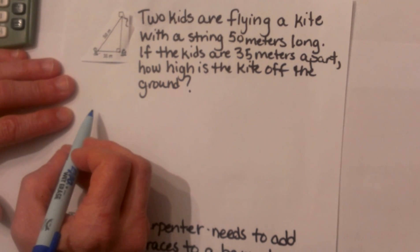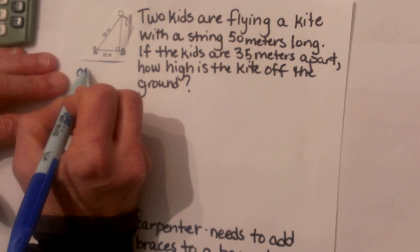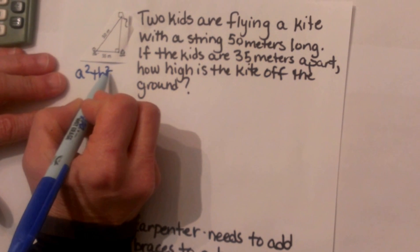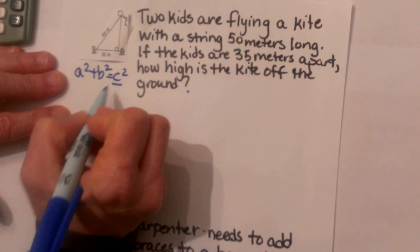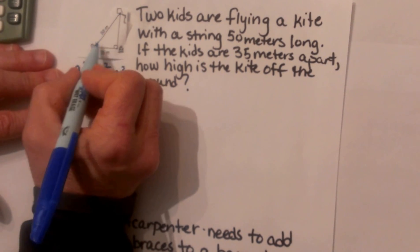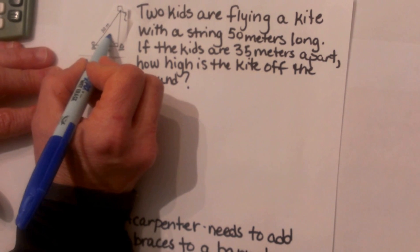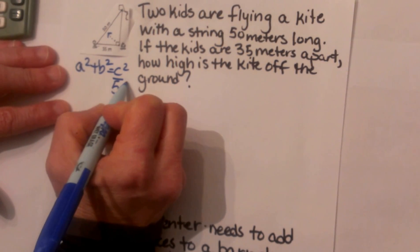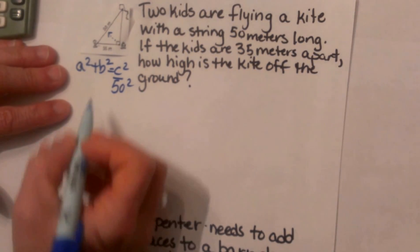So we are going to use the Pythagorean theorem and remember it is a² + b² = c² where c is the hypotenuse. On this problem c is opposite the right angle so that is the 50 that we are going to plug in and we are going to square it.